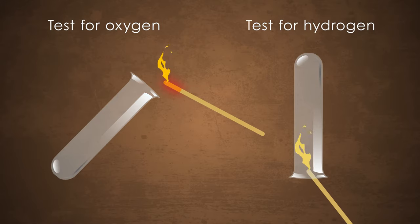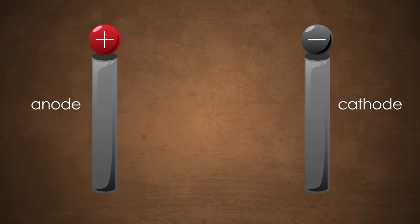Let us look closely at what's happening. The ions present in water will be the hydrogen ion and the hydroxide ion. These ions will be attracted towards the electrode with the opposite charge.